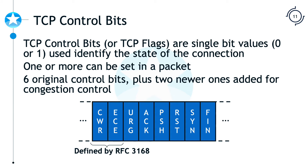With TCP, we have what are known as control bits or flags. The flags are used to identify different states in our connection. Looking at the diagram, the six bits to the left are the initial bits defined in the RFC for TCP. Later, explicit congestion notification was added along with two more flags, though those two additional flags are still not widely implemented or used.